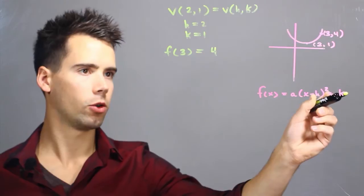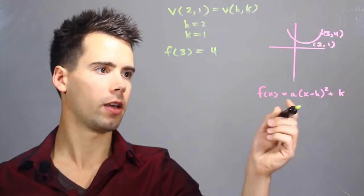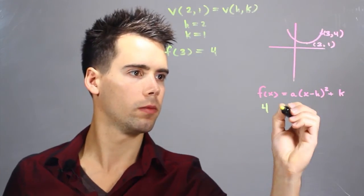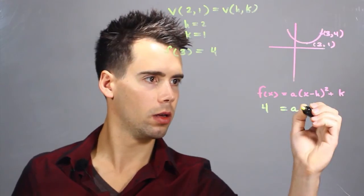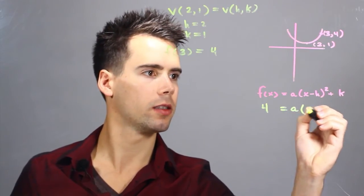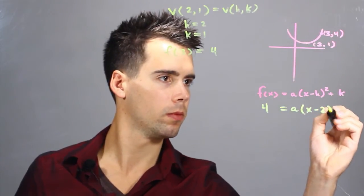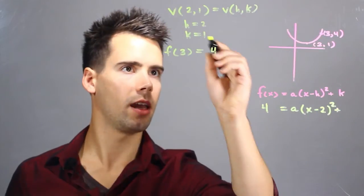So now we can go down to this equation and we find that f(x), which in our case when x equals 3 is 4, equals a times (x minus h), which is 2, squared plus k, which is 1.